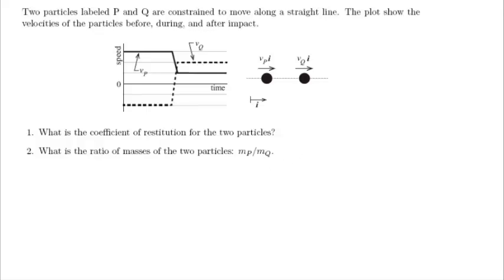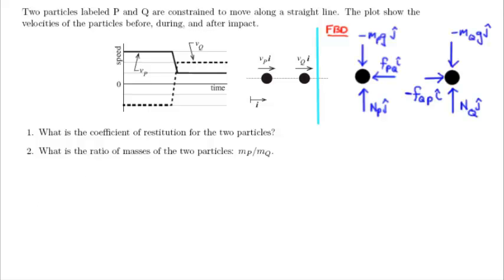So as a starting point for this problem, I'm going to draw a free body diagram. There's my two particles, P and Q. And if I draw the forces acting on these particles, my particle P has gravity acting down, then I've got a normal force acting upward to keep it constrained to this line right there.